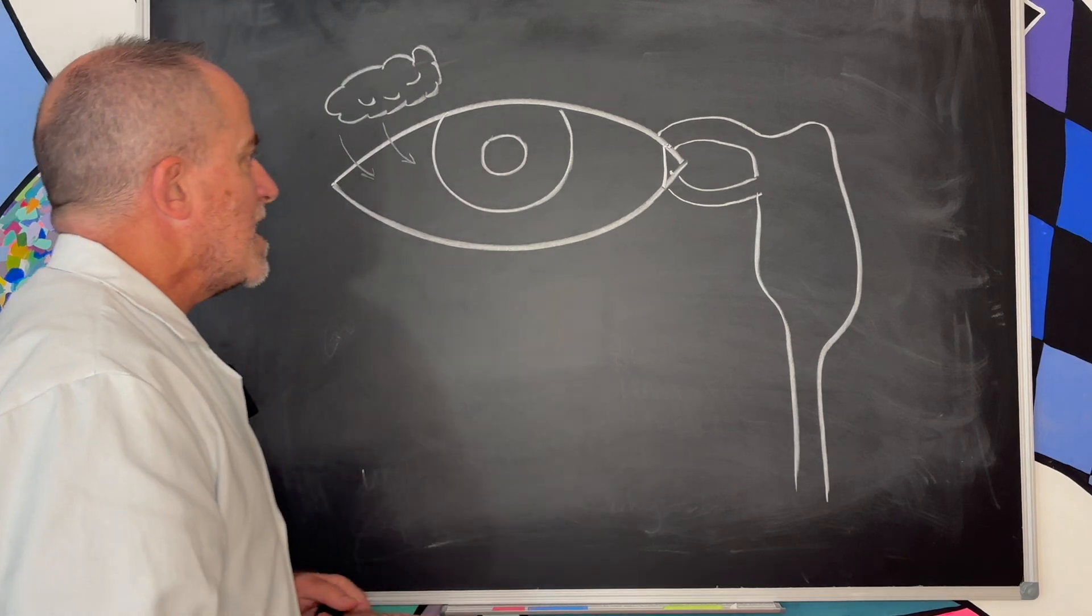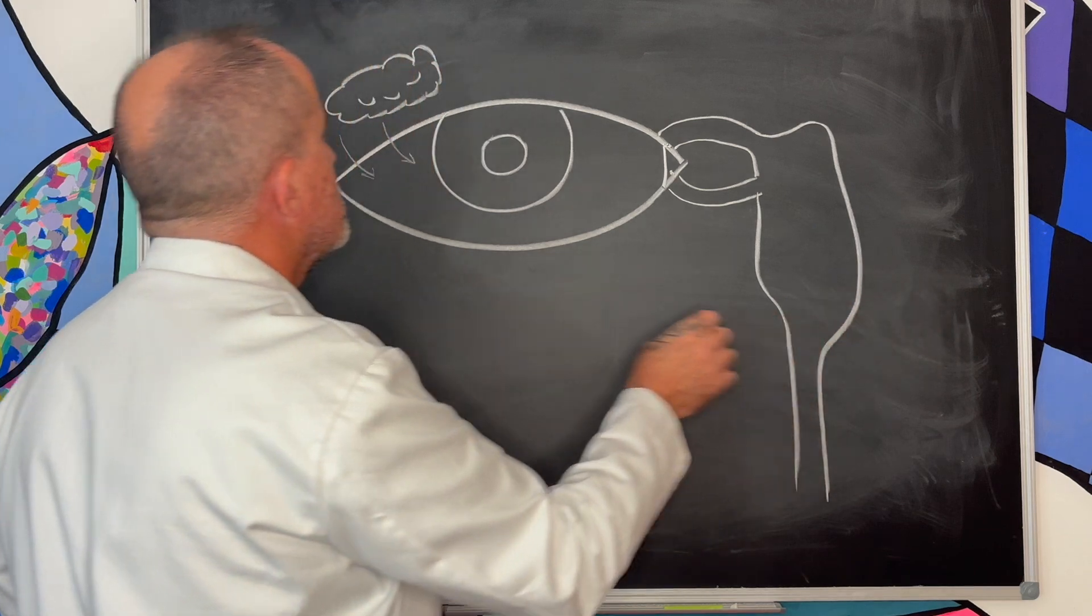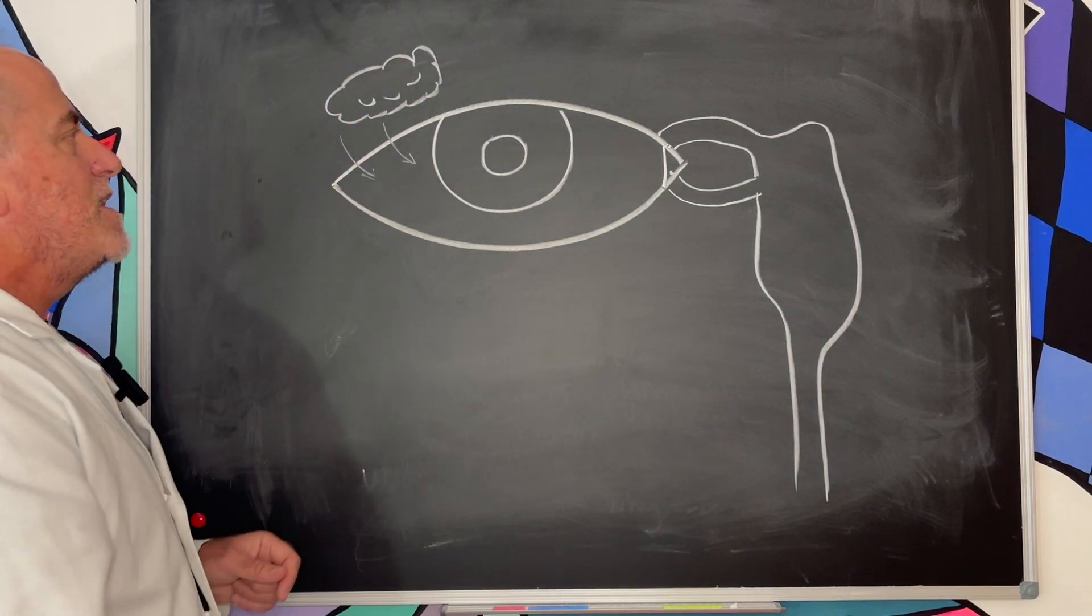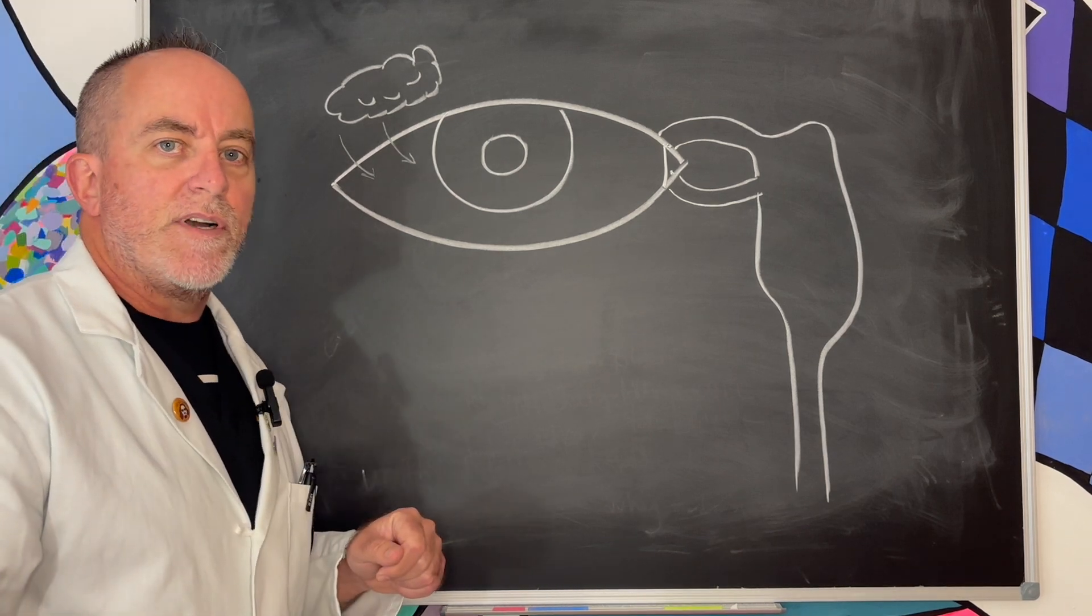This is how the system is actually supposed to work. This is a child's right eye. The nose is over here. The tear gland is out here by the eyebrow and it's constantly making a little bit of tears just to keep the eye moist.